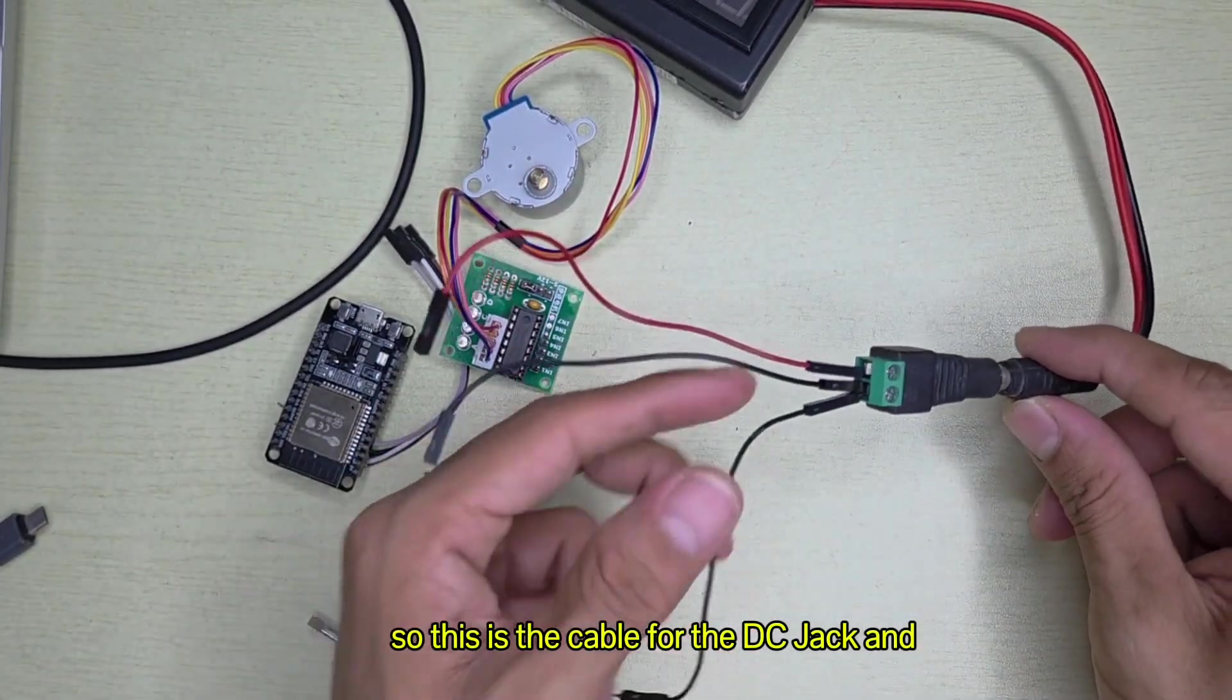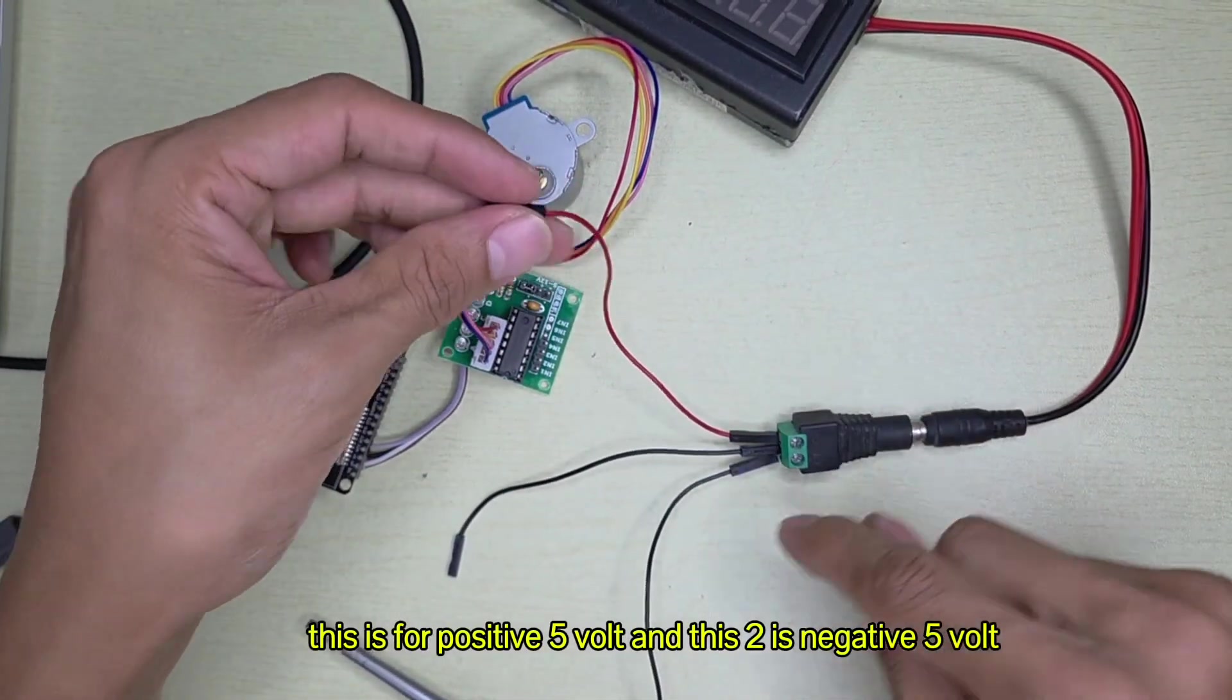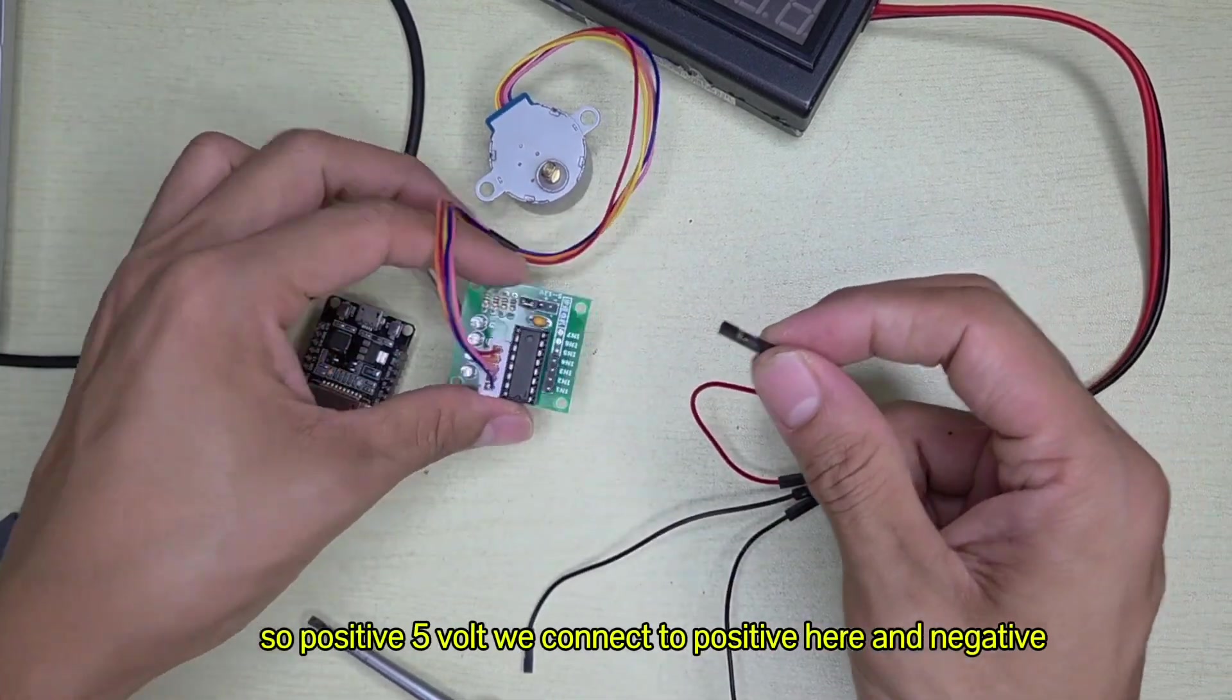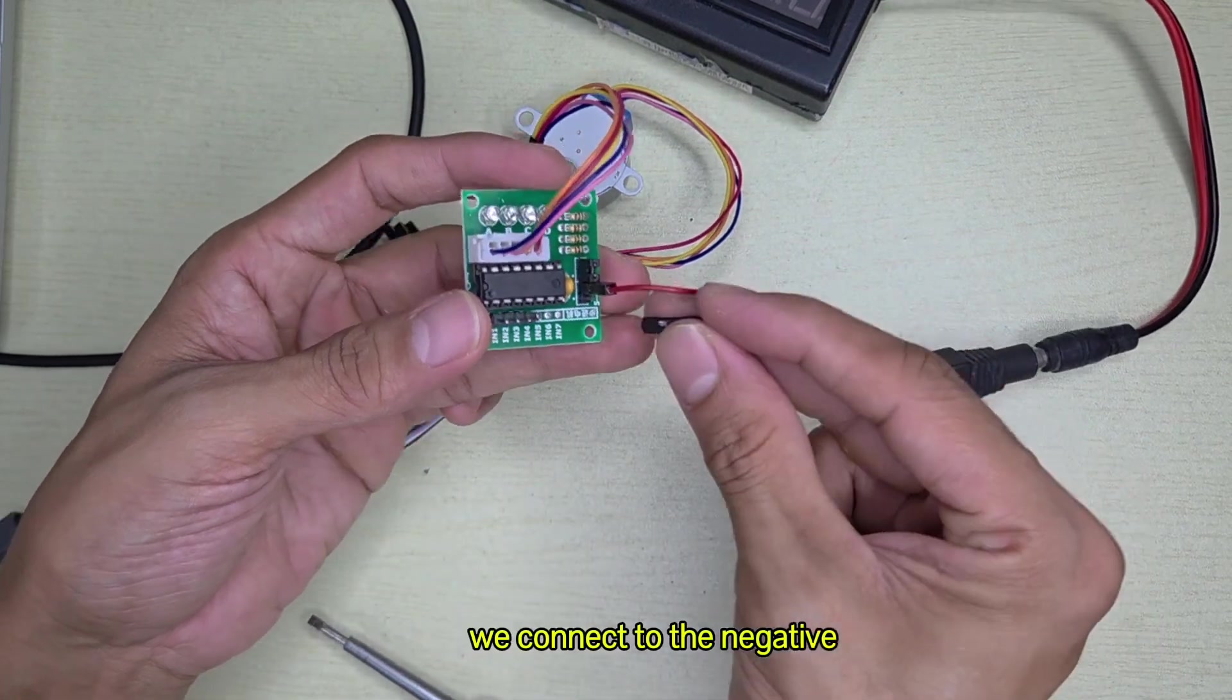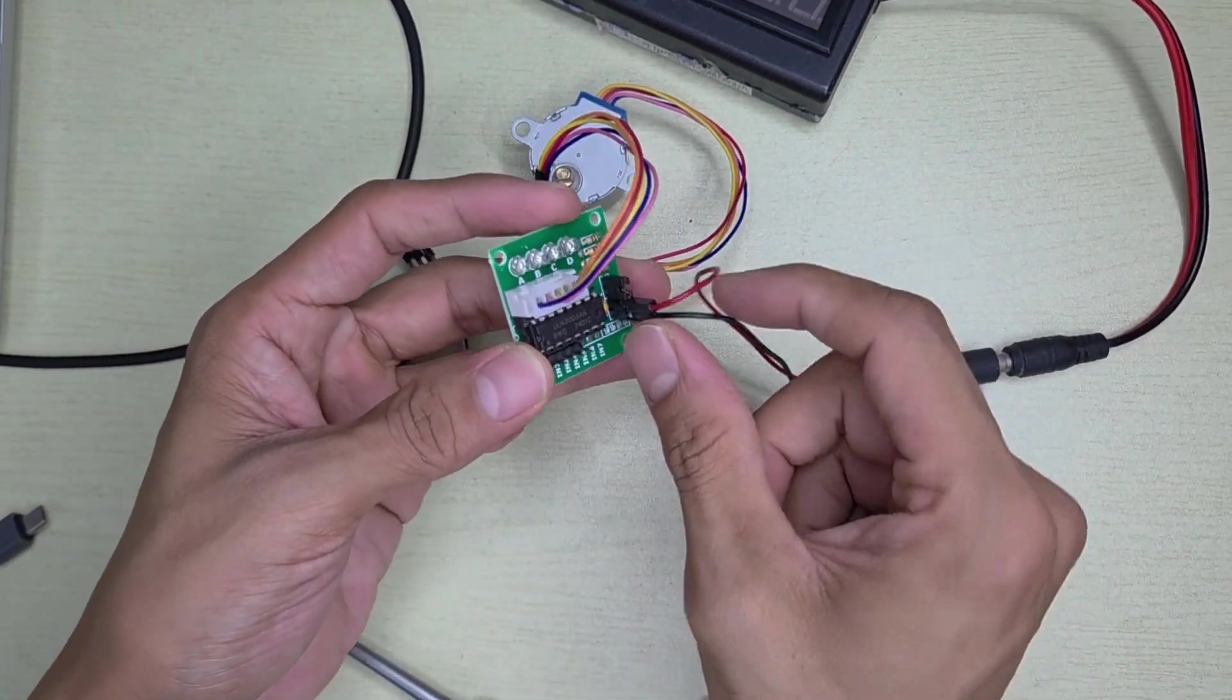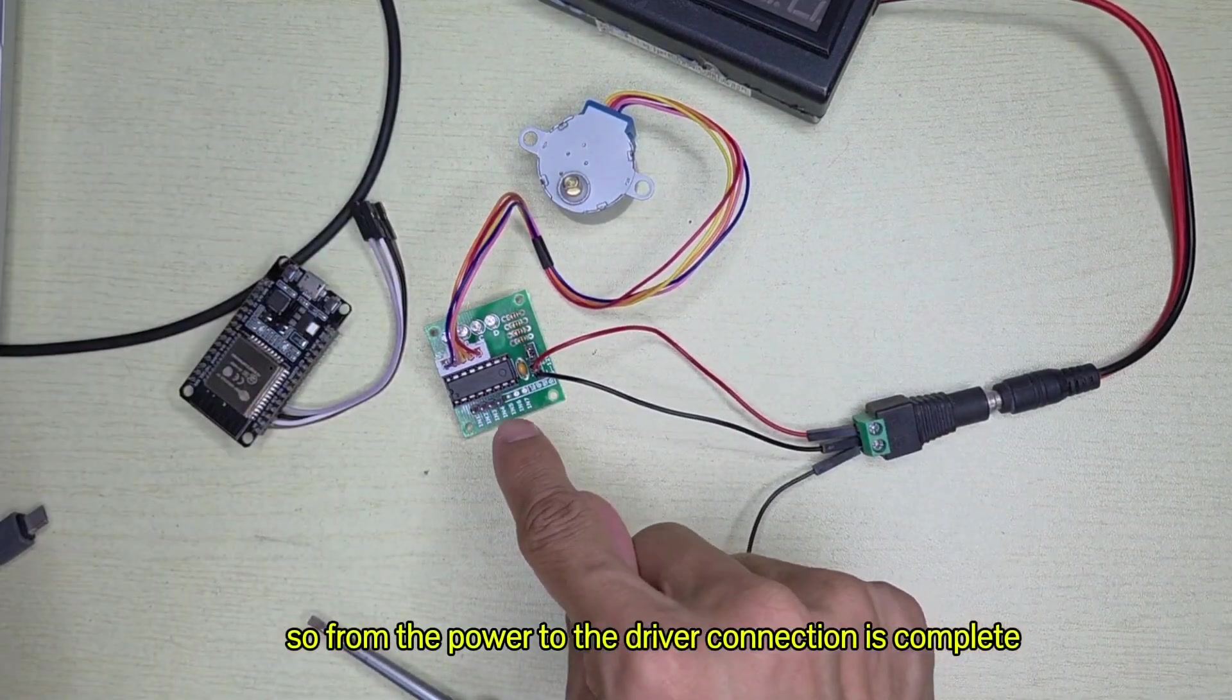This is for positive 5 volt and these two are negative 5 volt. So positive 5 volt we connect to positive here and negative we connect to the negative. The power to the driver connection is complete.